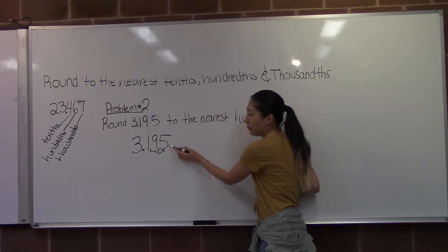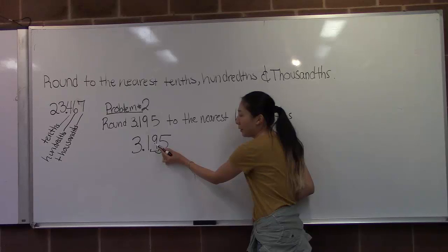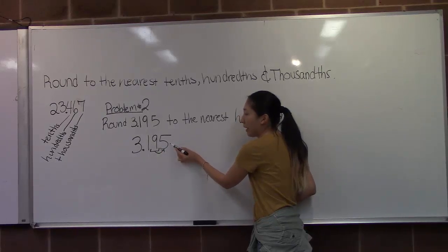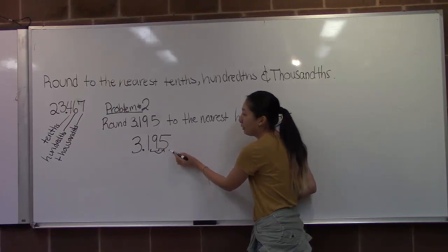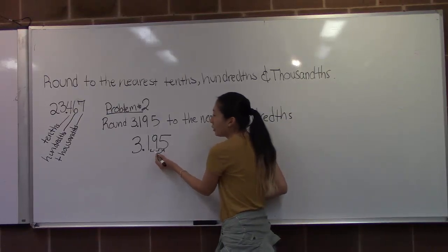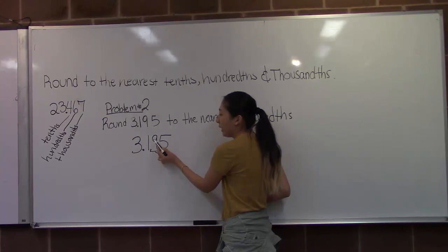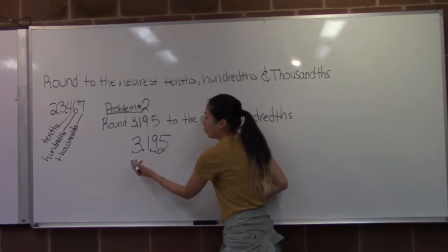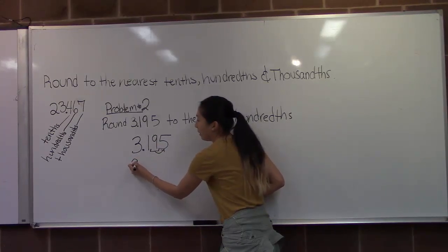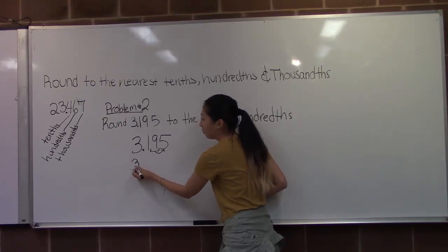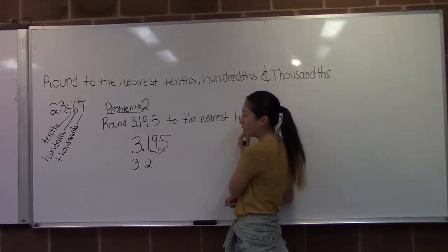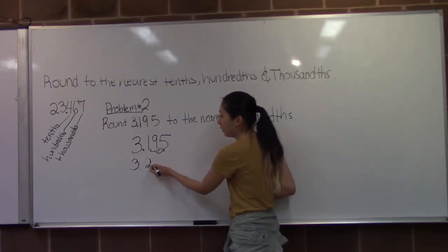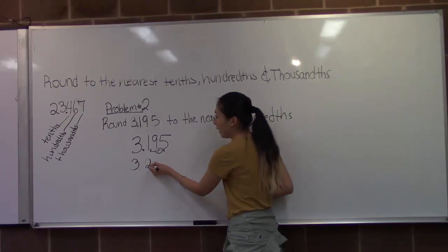If this number is 5 or larger, we'll be rounding this number up. If it's less than 5, we'll keep this number the same. So in this particular problem, we'll be rounding up. In order to round the 9 up, we'll be adding 1, which will make the answer to this problem 3.2. Since we're rounding to the nearest hundredths, we want to add a placeholder for the hundredths place, so we'll be adding the 0, making it 3.20.